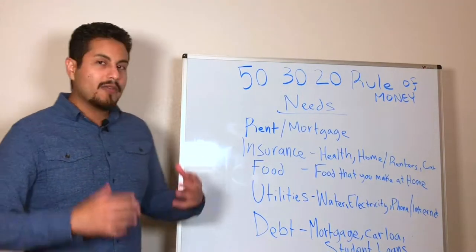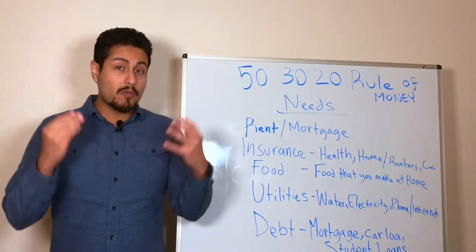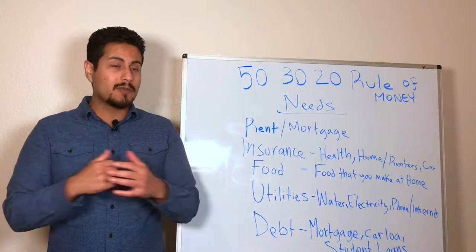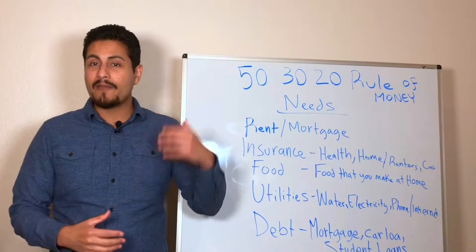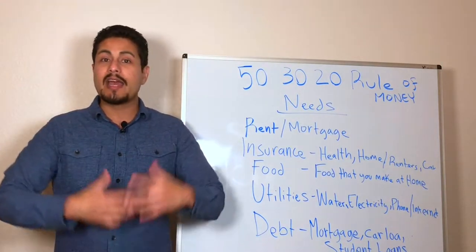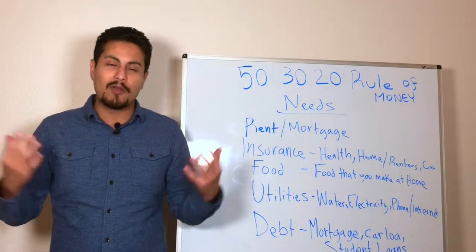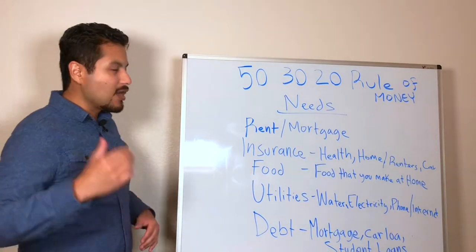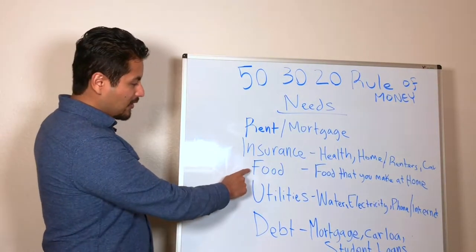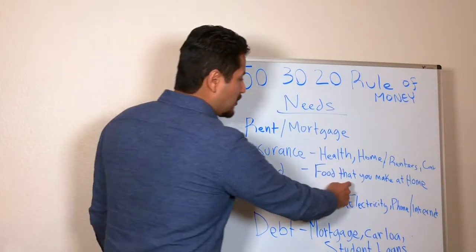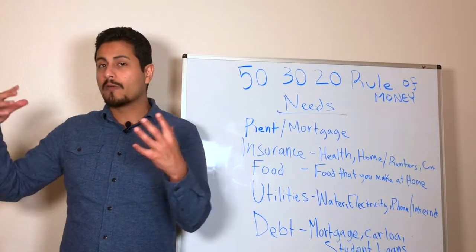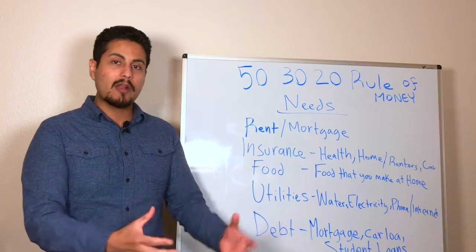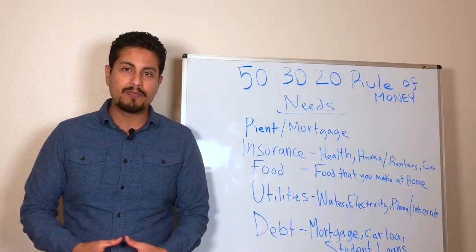Food. Now this is where we get confused. This is where we can confuse needs and wants because a lot of us will say, and I used to say that myself, hey I need to eat so I'm going to hit up my favorite restaurant and I'm going to buy food because I need to eat or else if I don't eat I die. But when it comes down to needs, make sure that you consider food, only food that you make at home. Food that you actually go to the grocery store, which is a lot more affordable, and then you actually make at home, which is a lot healthier. Eat at home guys.